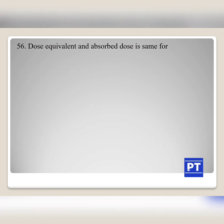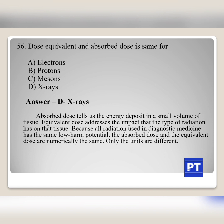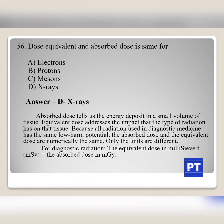Question No. 56: Dose equivalent and absorbed dose are the same for: Option A electrons, Option B protons, Option C mesons, Option D X-rays. The answer is Option D, X-rays. Absorbed dose tells us the energy deposited in a small volume of tissue, while equivalent dose addresses the impact that the type of radiation has on that tissue. Because all radiation used in diagnostic medicine has the same low harm potential, the absorbed dose and the equivalent dose are numerically the same — only the units differ. For diagnostic radiation, the equivalent dose is in millisievert and the absorbed dose is in milligray.